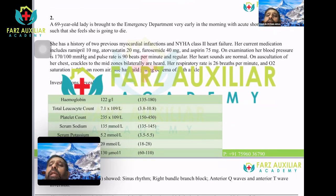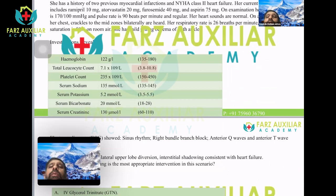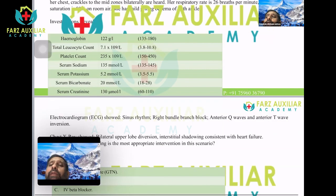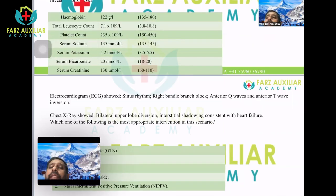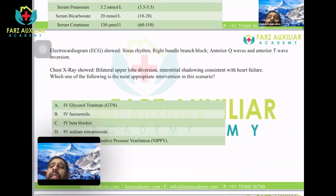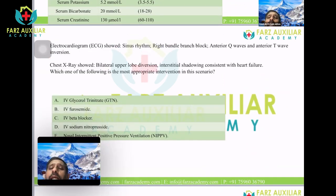Investigations show hemoglobin 12.2 g/dL, normal leukocyte and platelet counts, sodium 135, potassium 5.2, creatinine 1.3 (mildly elevated). ECG shows sinus rhythm, right bundle branch block, anterior Q waves, and anterior T-wave inversion. Chest X-ray shows bilateral upper lobe diversion and interstitial shadowing consistent with heart failure. The options for most appropriate intervention are IV glyceryl trinitrate, IV furosemide, IV beta-blocker, IV sodium nitroprusside, or NIV/NIPPB.